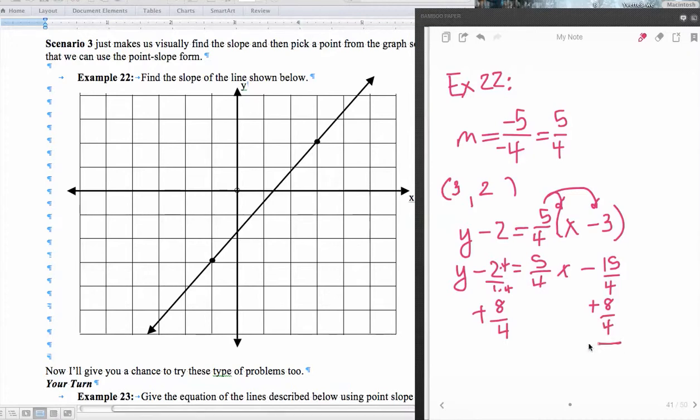And now I can simplify it. So y is equal to 5 fourths times x, and then minus 15 minus 8, which is 7, and those are fourths. And so there's my equation. And just like before, I can check to see if that other ordered pair is satisfied, satisfies this equation, and therefore if it is actually my equation. And so again, I can go down here and go, this is a negative 1, and this is a negative 3.